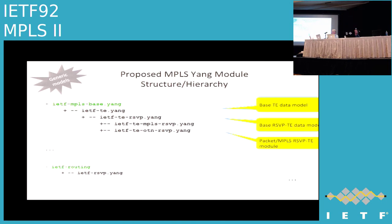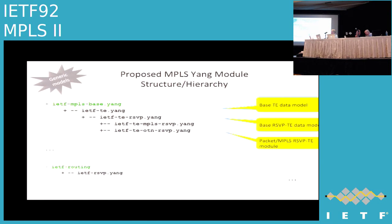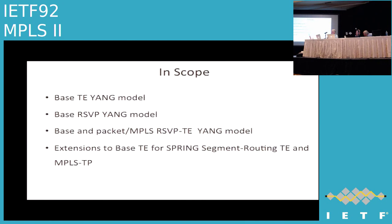Because MPLS data plane is not the only data plane for traffic engineering, we decided to have a data-plane-agnostic model and then augment that base TE data model with MPLS data plane specific attributes. We ended up with a base TE model, a base TE RSVP model, and MPLS RSVP TE augmenting that. We also defined a standalone RSVP Yang model, since RSVP is not necessarily only used for MPLS. In scope of our work are the base TE Yang model, base RSVP Yang model, base MPLS packet RSVP TE Yang model, and extensions for segment routing TE and MPLS TP.